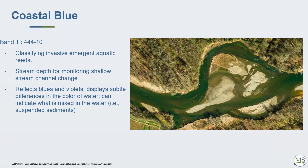We'll talk about some of the uses and applications of the new bands. The coastal aerosol blue band is being used for classifying things like aquatic reeds, invasive species, and is very useful for shallow stream bathymetric change mapping. You can also look at suspended sediment concentration, turbidity, and algal blooms. There's a lot of interest in monitoring freshwater quality in lakes and rivers — algal blooms, eutrophication, and elements from agricultural runoff that may affect water bodies.